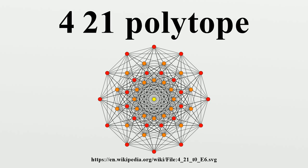The bi-rectified 421 is constructed by points at the triangle-face centers of the 421. The tri-rectified 421 is constructed by points at the tetrahedral centers of the 421, and is the same as the rectified 142.